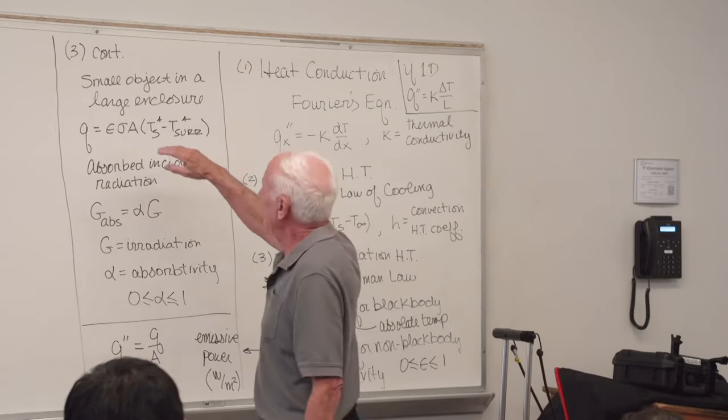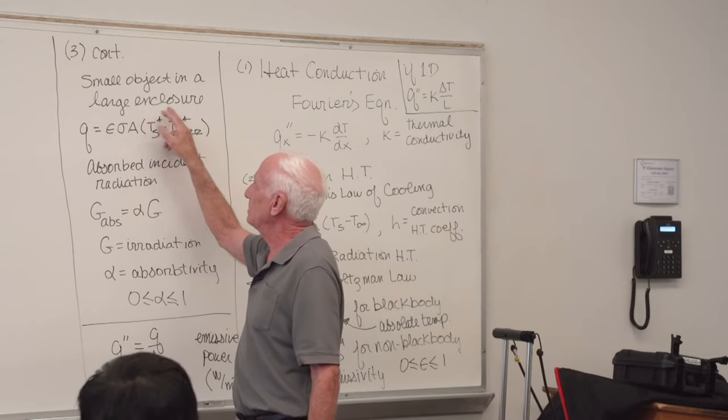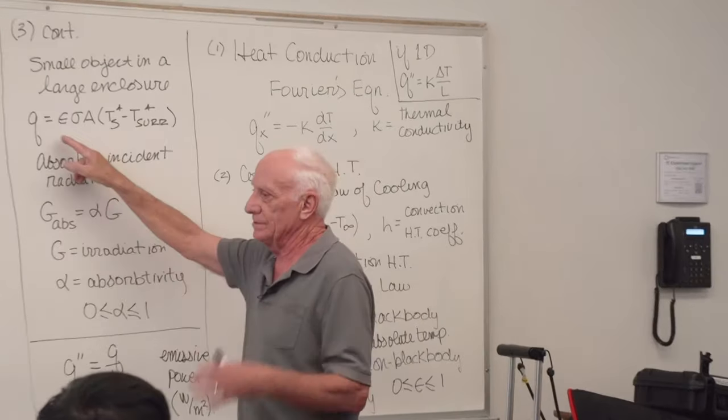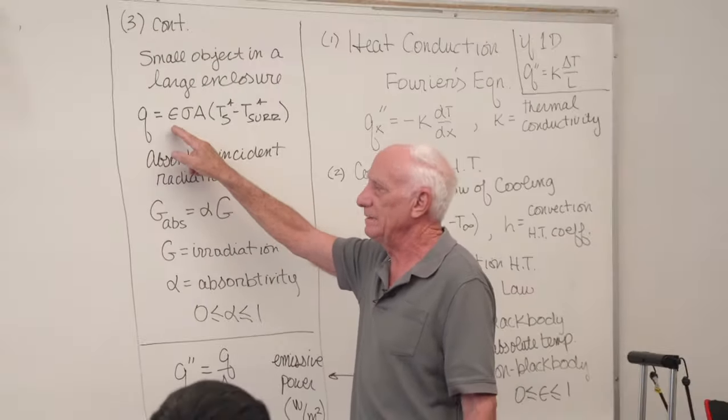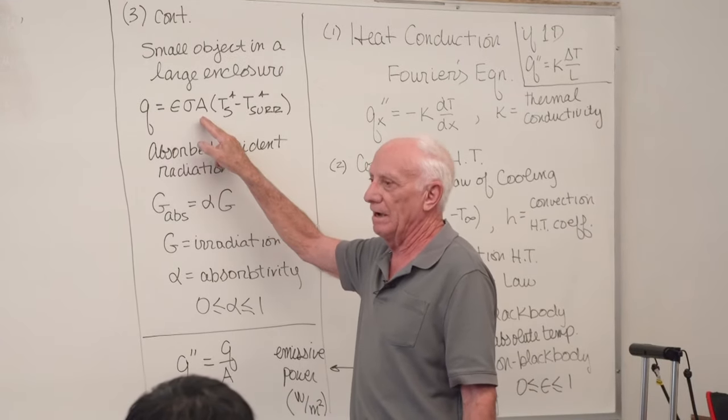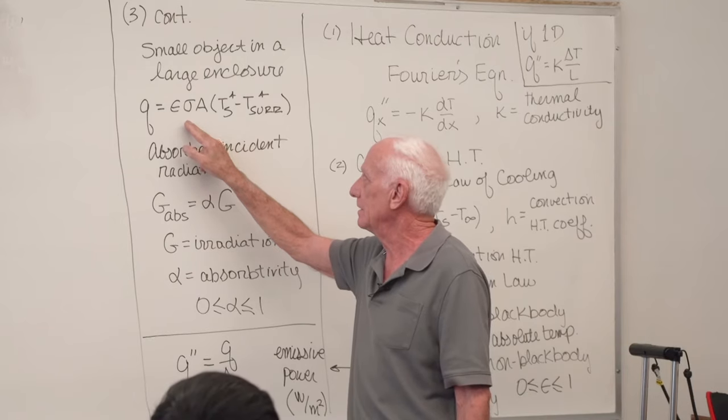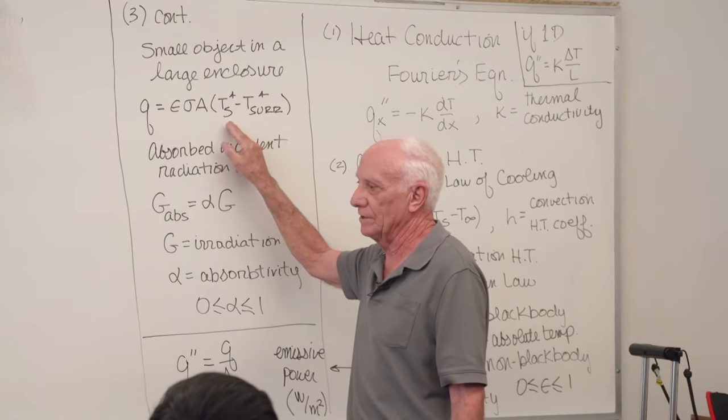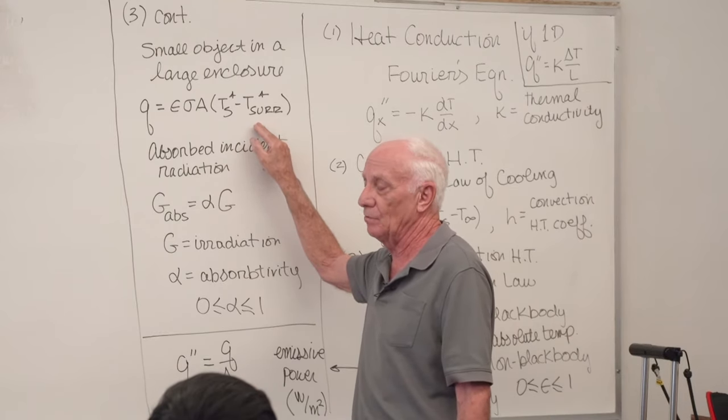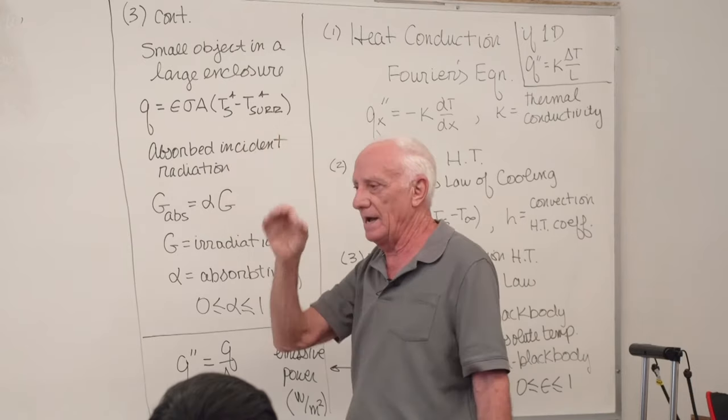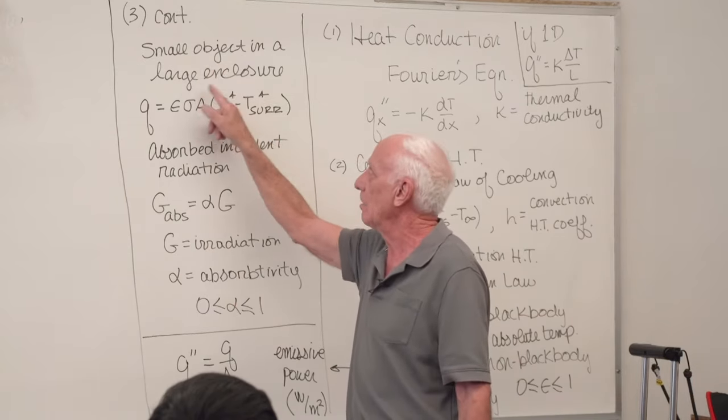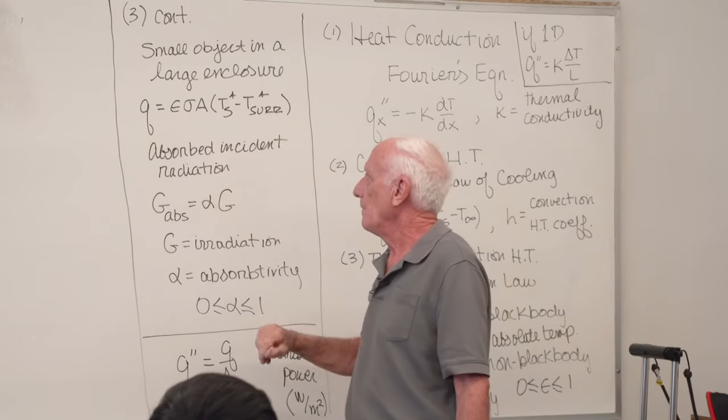If you have a small object in a large enclosure and you want to know the exchange of thermal energy between those two objects, here's the equation. Q in watts equal emissivity of what? The small object. A of what? The small object times sigma times T surface of the small object to the fourth minus T surroundings to the fourth. What is that? The temperature of the surrounding walls in a room, or if you put a dime in a basketball, that's a small object, a dime in a large enclosure, a basketball.